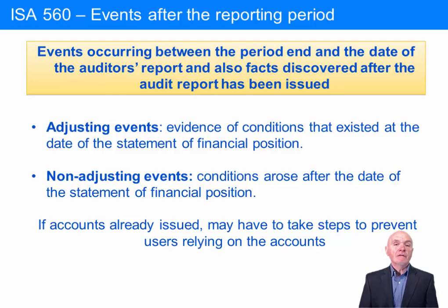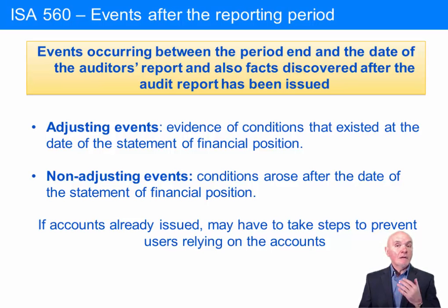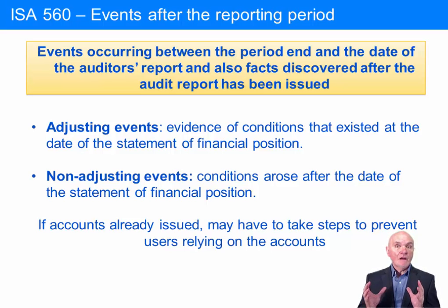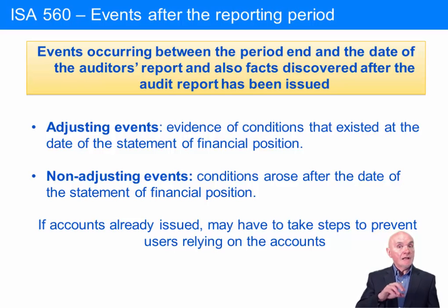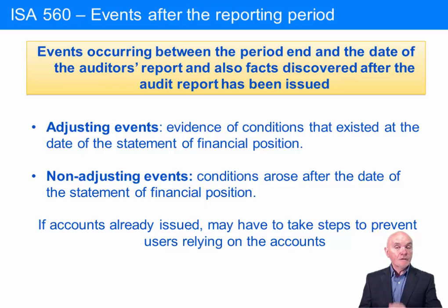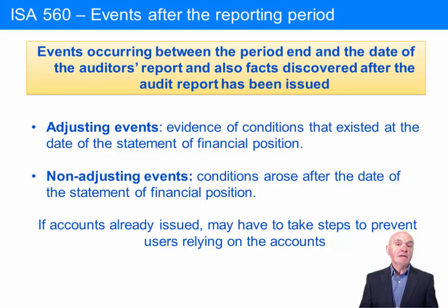When looking at receivables, there's always a question mark over their valuation — will this person pay or not? For example, with a year-end of the 31st of December, if on the 15th of January the customer — the person owing money to your client — goes into liquidation with no hope of anything being paid, the act of going into liquidation occurred after the period end. But that gives you evidence that, if only we'd known it at the 31st of December, the receivable was doomed and was not going to be paid. It tells us information which helps us value that receivable at the year-end.